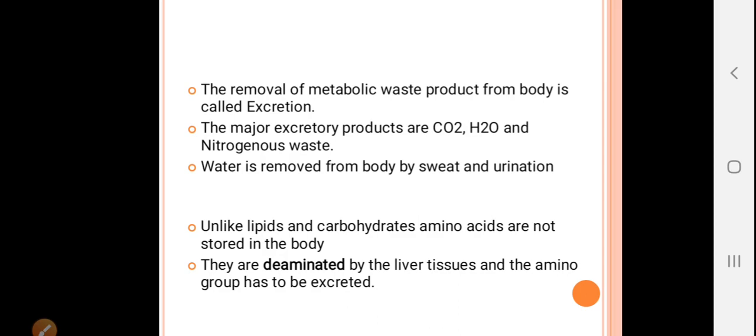Nitrogenous waste is removed by a special excretory organ like the excretory system in humans. Unlike lipids and carbohydrates, amino acids are not stored in the body. They are deaminated by the liver tissues, and the amino group has to be excreted.